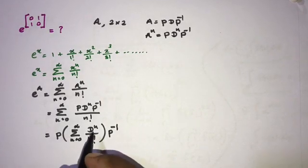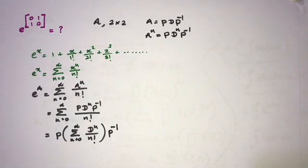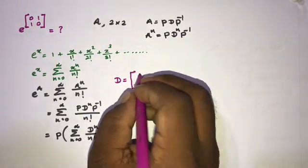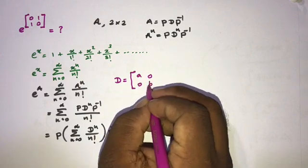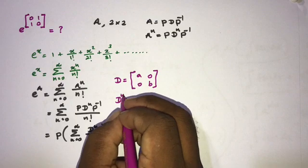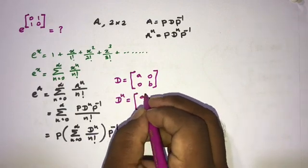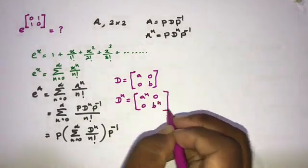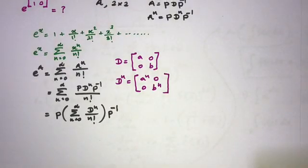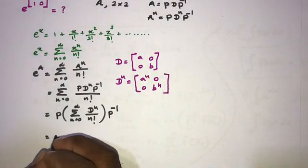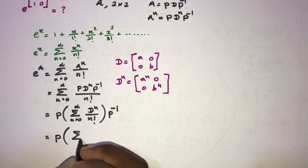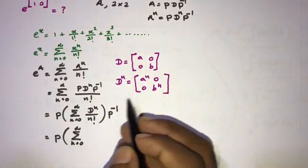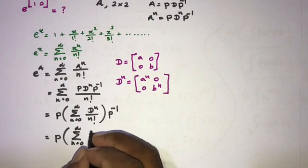Now for the diagonal matrix D, if D equals the matrix with entries a and b on the diagonal, then D to the n equals the diagonal matrix with a to the n and b to the n. We can substitute this into the sum, writing P times the sum of the diagonal matrix with a to the n and b to the n over n factorial.